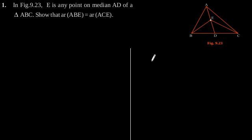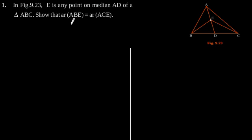Exercise 9.3, question number 1. In figure 9.23, E is any point on a median AD of a triangle ABC. We need to show that the area of triangle ABE is equal to the area of triangle ACE.